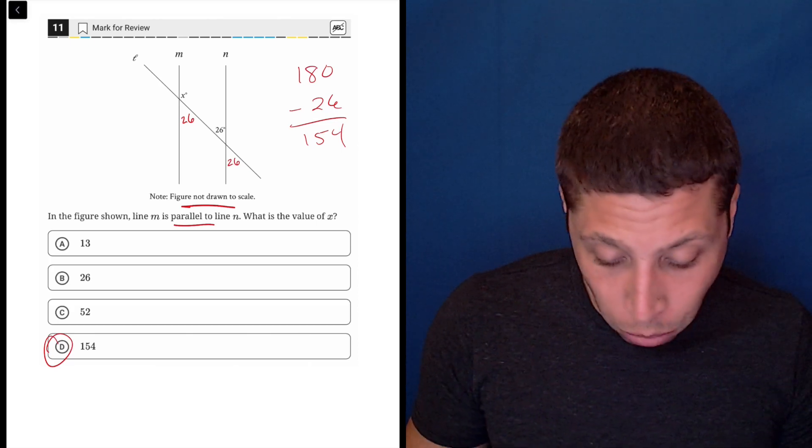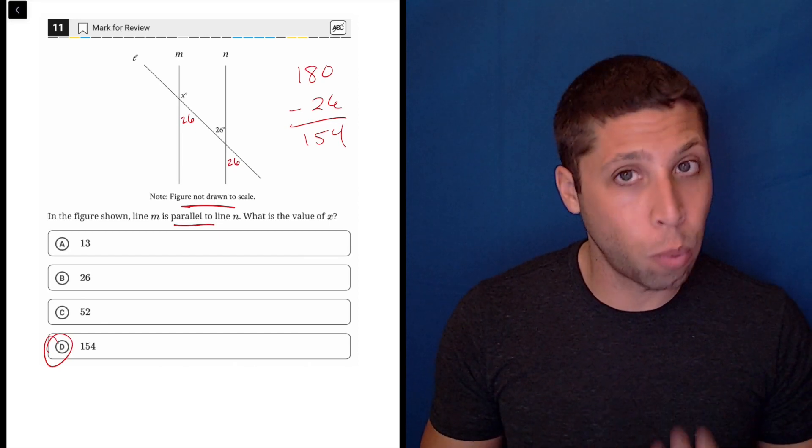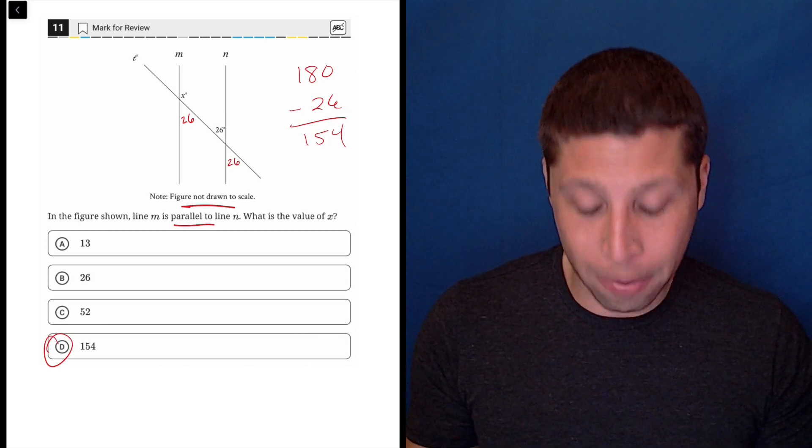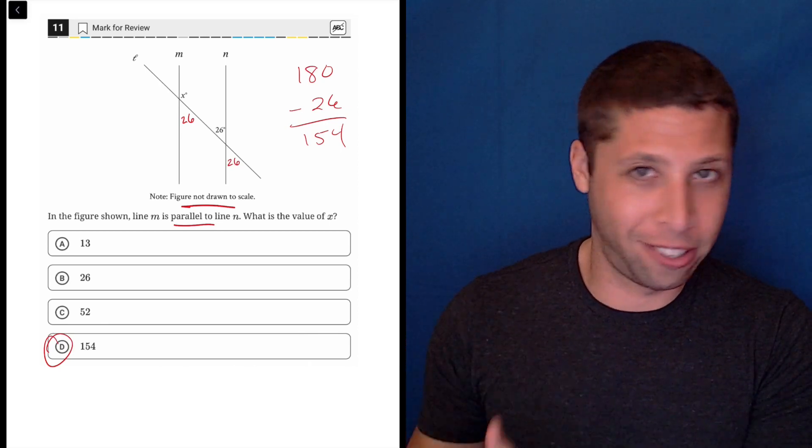I'm not really sure where you'd go wrong here. None of these other answers make any sense if we know anything about how these parallel lines work. Just remember that there's always this combination of congruent angles and supplementary angles.